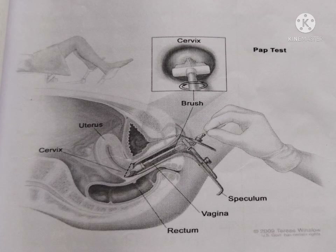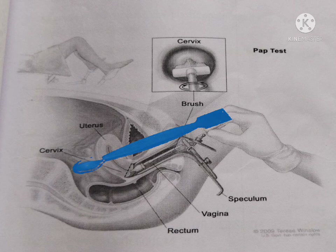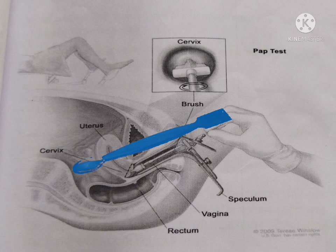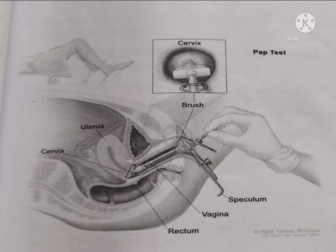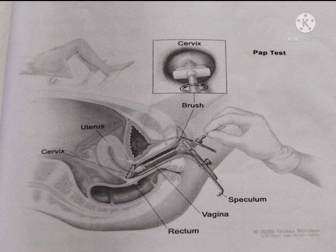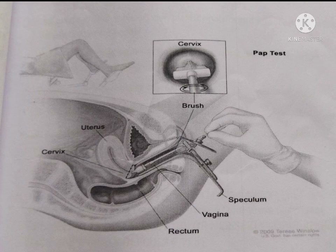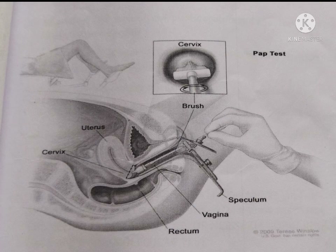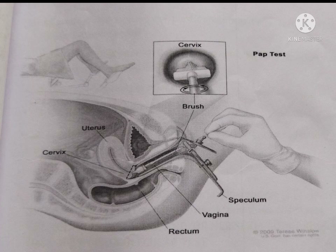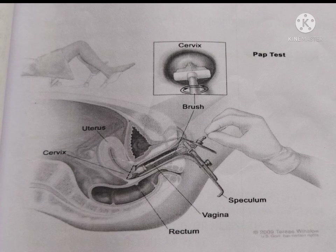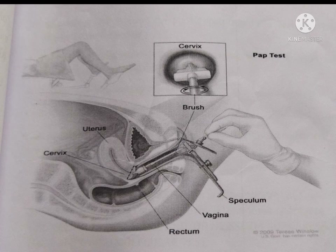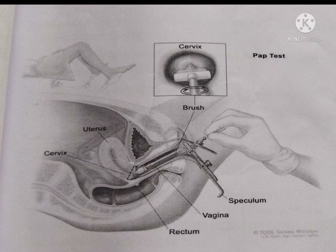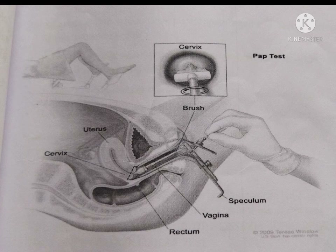Specimen collection: a pap solution vial, plastic spatula, and endocervical brush are used for collection. Step 1: rotate collection device in PreservCyt vial 10 times while pushing against the vial wall. Step 2: swirl brush to further release material. Step 3: discard collection device. Step 4: label vial with patient's name, date of birth, date of collection, and ordering physician's name.